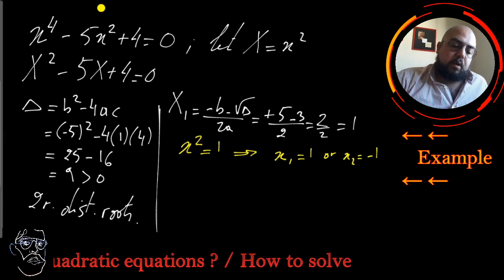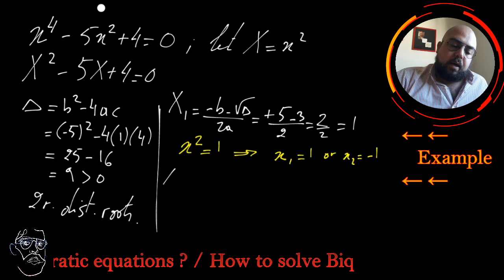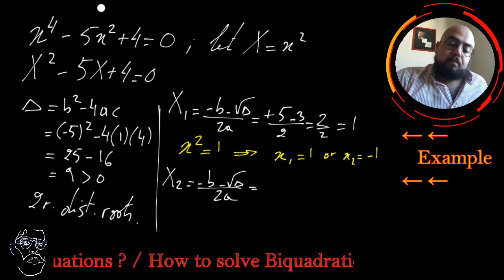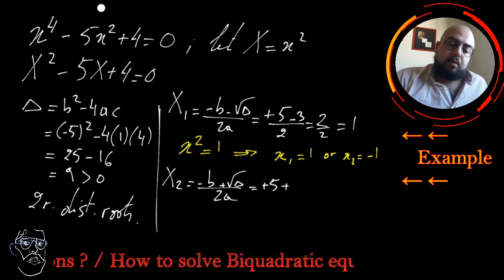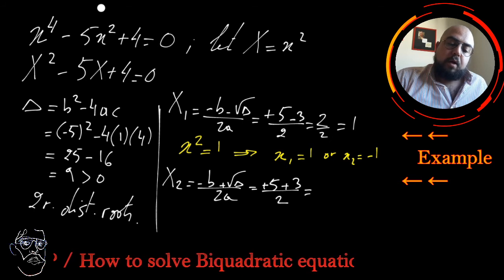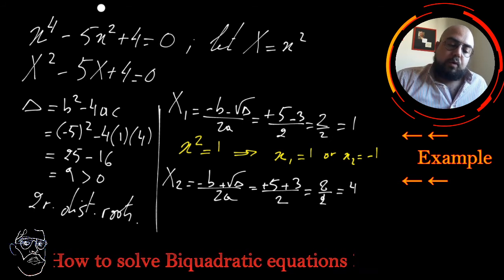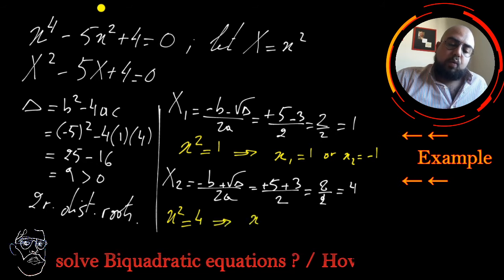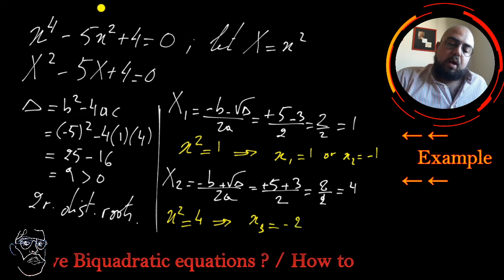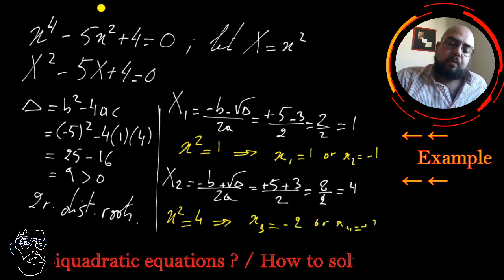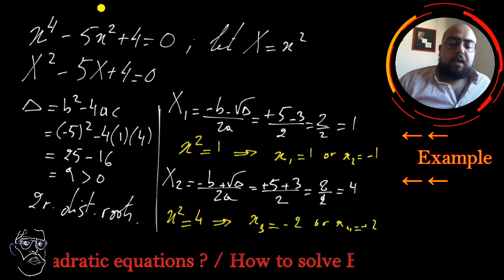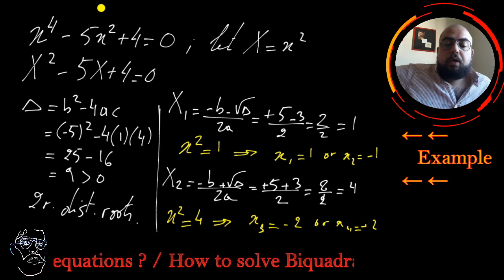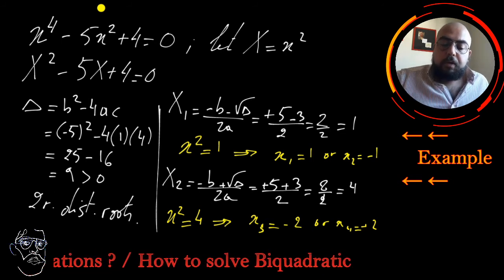For the second root, X₂ = (5 + 3) / 2 = 8/2 = 4. So x² = 4, which means x₃ = -2 or x₄ = +2. So I have four roots in this case. It's a fourth-degree equation, and it's very possible to have four distinct real roots. The roots are 1, -1, +2, and -2.